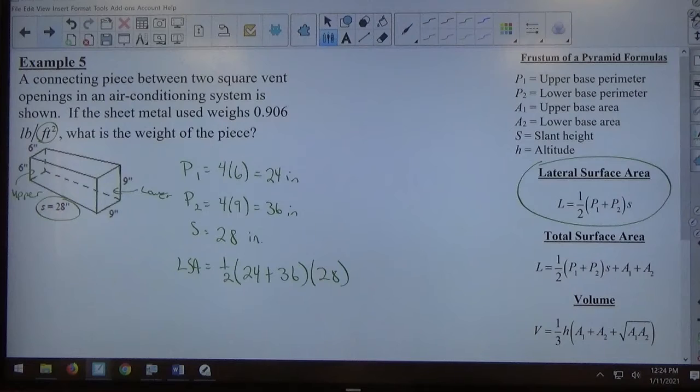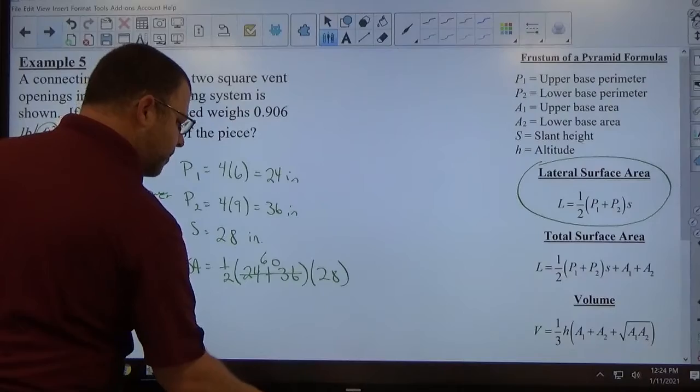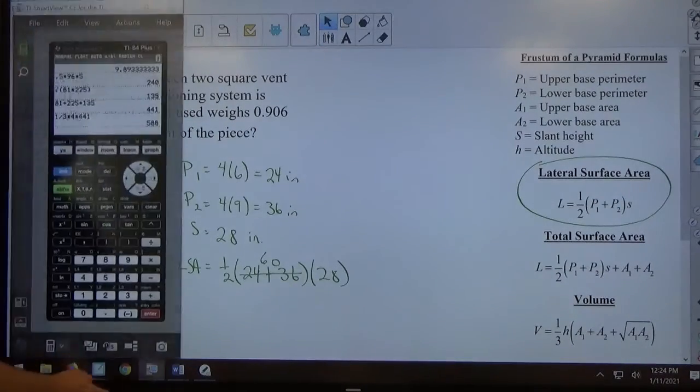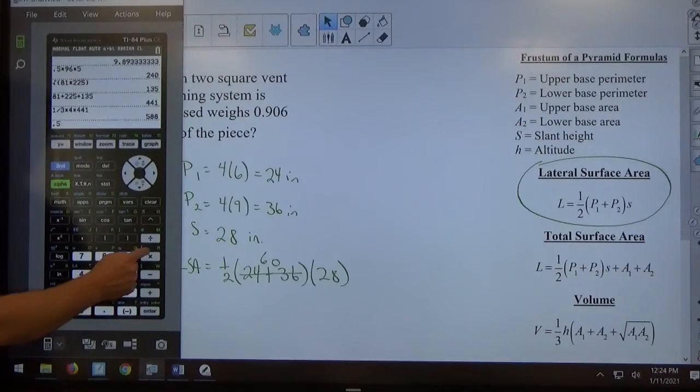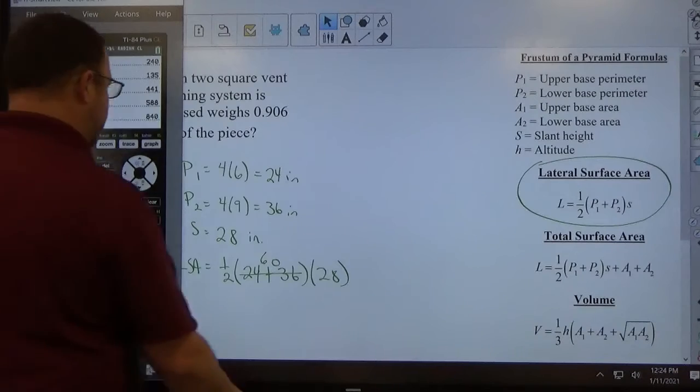Within the formula, we have perimeter 1 and perimeter 2 being added together, so we're going to combine these together to single number 60. We punch in our calculator: 0.5 times 24 plus 36, which is 60, times the slant height, 28, gives me a lateral surface area of 840 square inches.